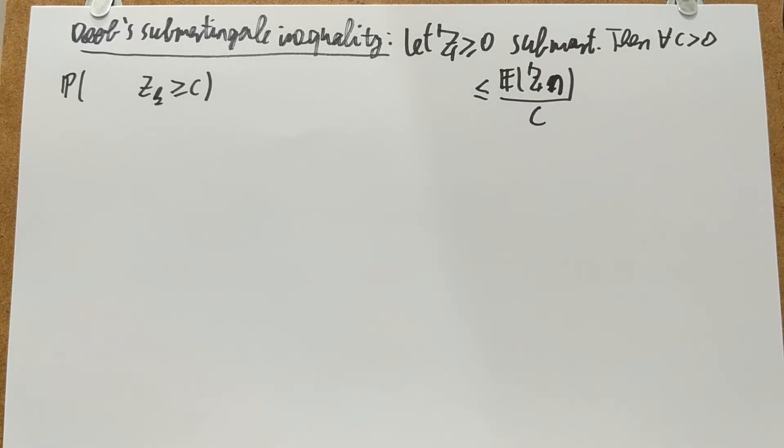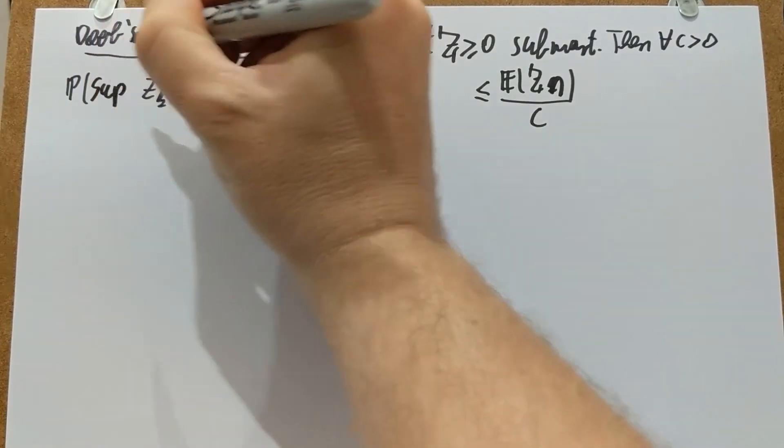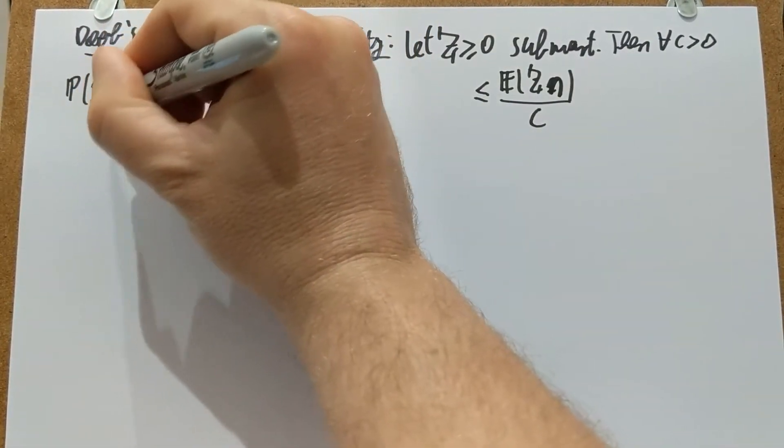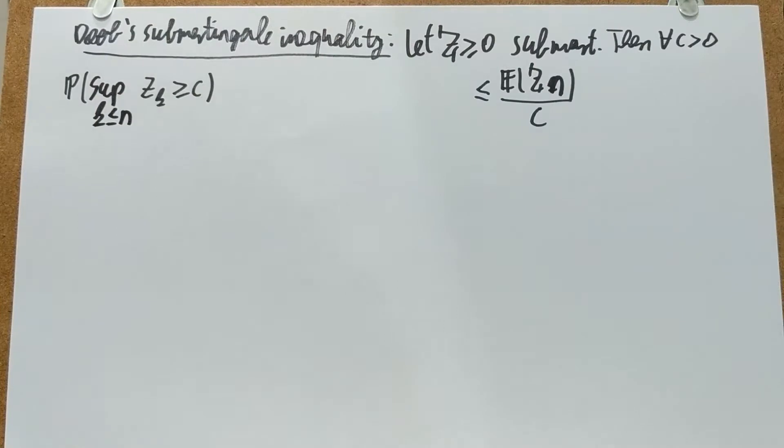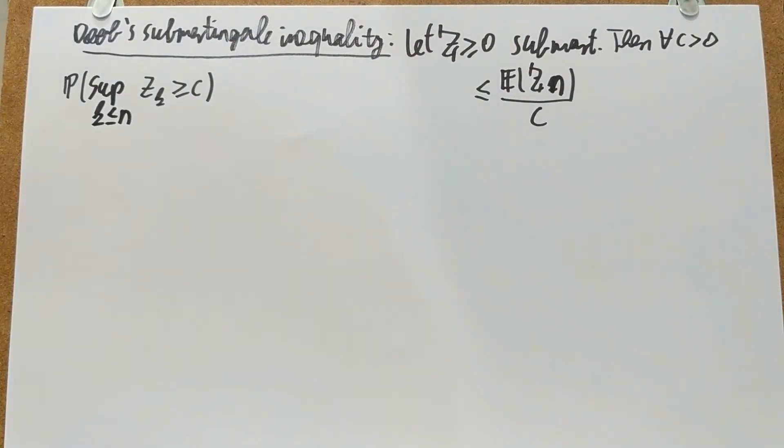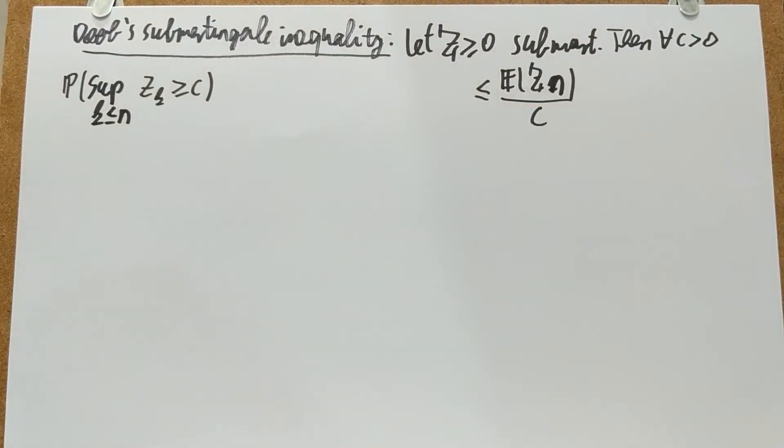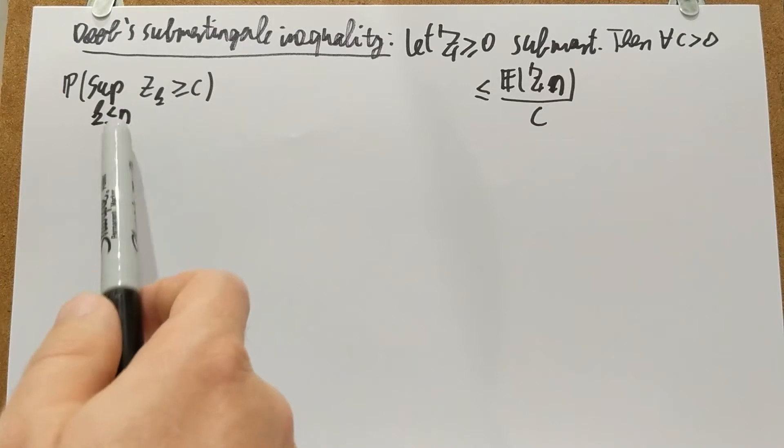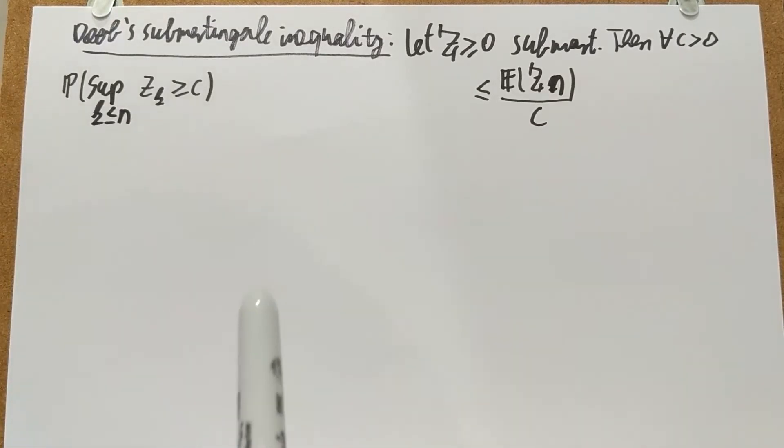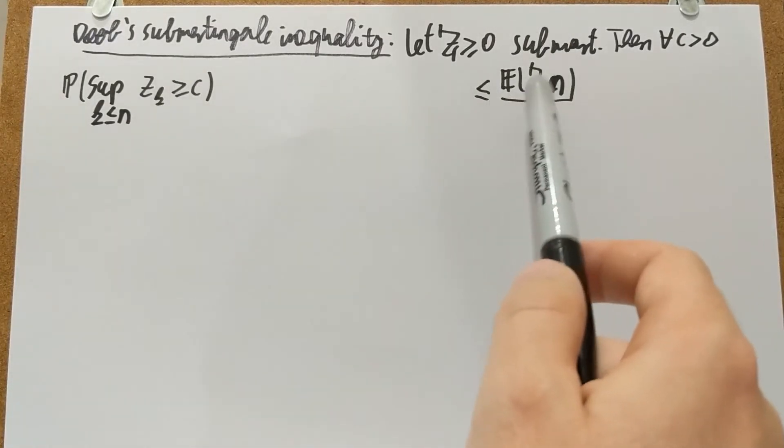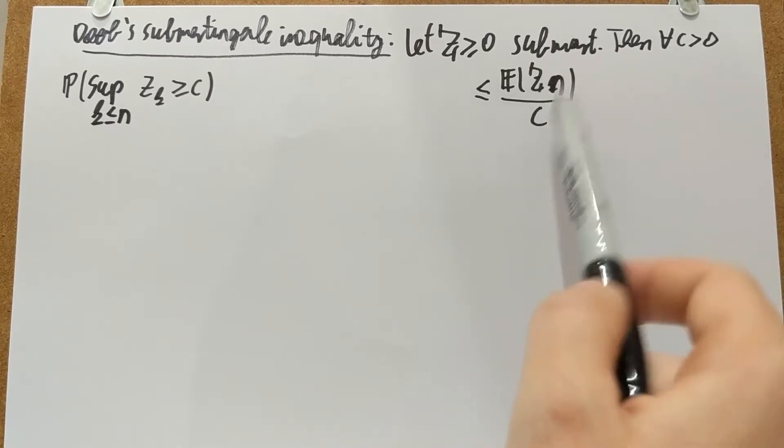The submartingale inequality is stronger because I'm able to put here a supremum, the largest of everybody up to N. Probability that that's larger than C is bounded by this kind of Markov type bound on the last member of the martingale sequence I'm looking at. So the largest of the Z up to N, probability that that's at least C, is bounded by the mean of the last one over C.